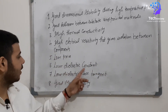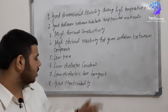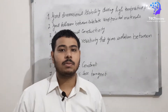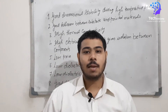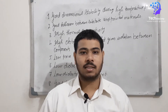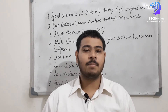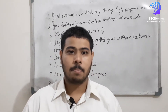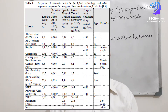5. Low price. 6. Low dielectric constant. 7. Low dielectric loss tangent. 8. Good machinability. Note that no single substrate can satisfy all these conditions. Various types of ceramics are used for making thick film substrates, with 96% alumina being the dominant one, because it has good electrical and mechanical properties, as you can see in the table on your screen.